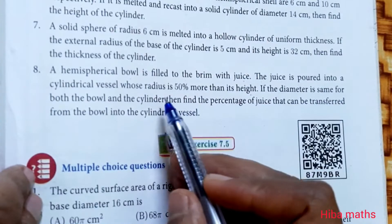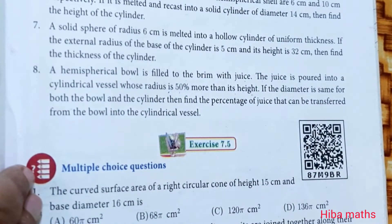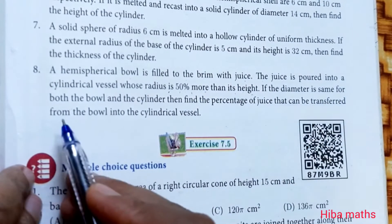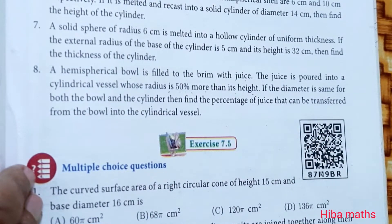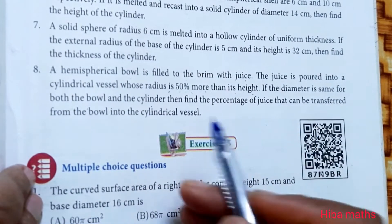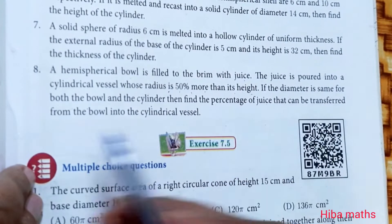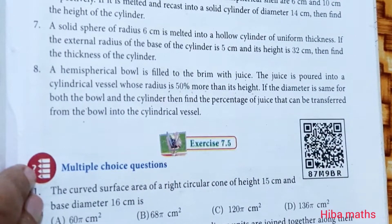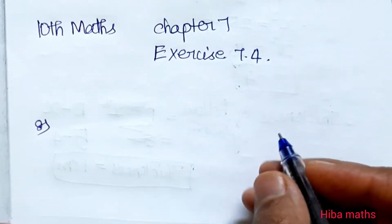In the cylindrical vessel, the radius is 50% more than its height. If the diameter is the same for both the bowl and the cylinder, find the percentage of juice that can be transferred from the hemispherical bowl into the cylindrical vessel.